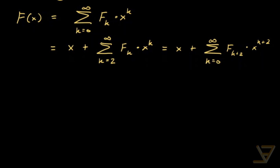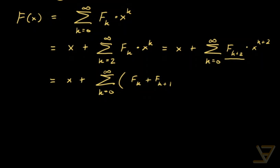The reason we did this is that for k plus 2, f(k+2) is greater than or equal to 2, so we can apply the recurrence relation to that. We get that this is equal to x plus the sum from k equals 0 through infinity of f(k) plus f(k+1), times x to the power of k plus 2.